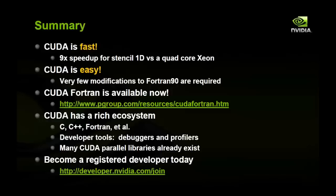In summary, CUDA is fast — we achieved a 9x speedup for stencil 1D versus a quad-core Xeon. CUDA is also easy, requiring very few modifications to Fortran 90 to gain these speedups. You can download CUDA Fortran today at the link shown. CUDA also has a rich ecosystem — you can program in C, C++, or Fortran, with other community bindings as well. There's a large array of developer tools including debuggers and profilers, and a number of existing libraries you can call directly without writing the algorithms yourself. You should become a registered developer if interested — visit the website listed to do so today.